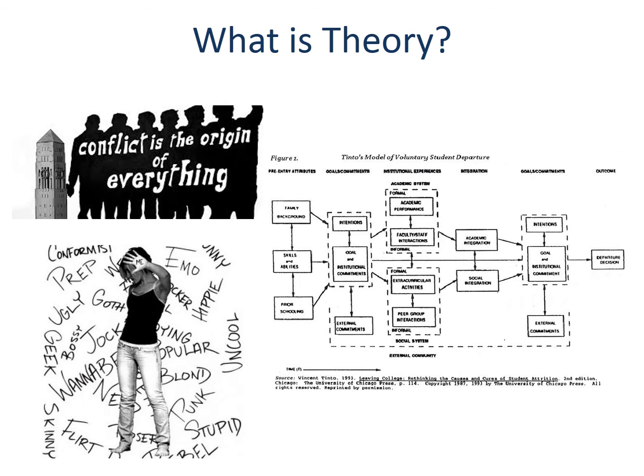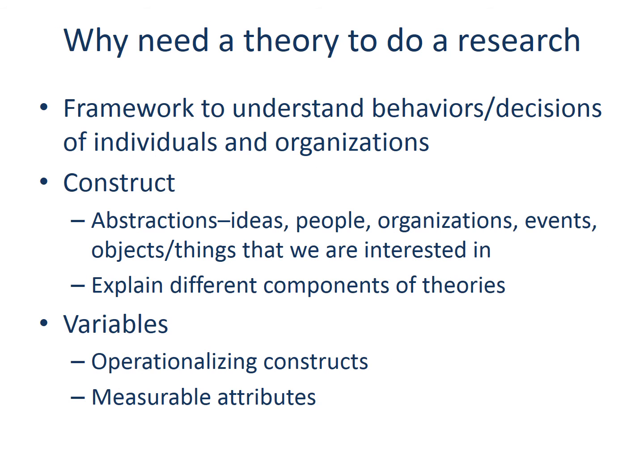As already mentioned, Tinto's model of student departure explains dropout decisions based on not only individual-level factors but also institutional-level factors. So it is an example of a meso-theory that combines the two levels. As you can see from these examples, theory provides a framework to understand the phenomena we study, often behaviors or decisions of individuals and organizations.